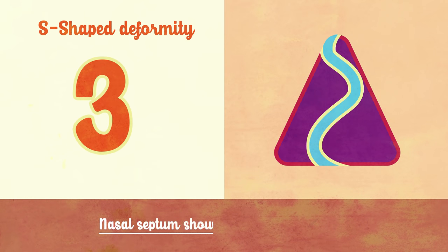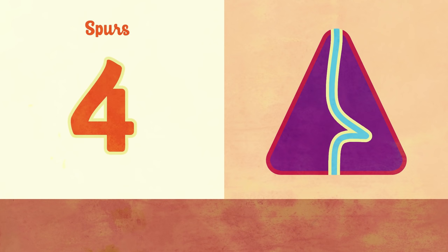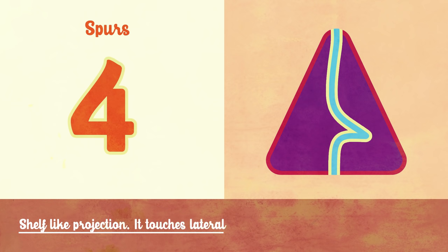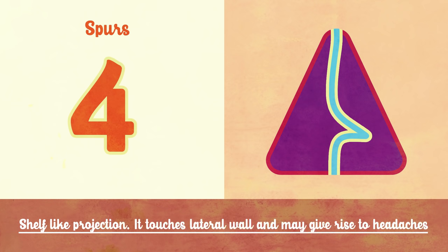Third, S-shaped deformity: the nasal septum shows an S-shaped deformity, which results in bilateral nasal obstruction. Fourth, spurs: a shelf-like projection that touches the lateral wall and may give rise to headaches.